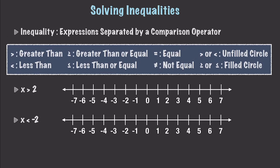What exactly is an inequality? An inequality is just two expressions separated by a comparison operator. So you can see here the comparison operators: we have greater than, less than, greater than or equal to, less than or equal to, and of course equal and not equal.